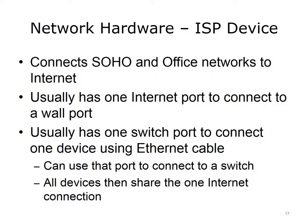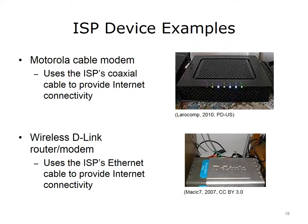The ISP device usually has one Internet port, which can be connected to a wall port. The ISP will usually provide the necessary cabling and other supplies needed to connect to the ISP device. This device usually has one switch port to connect one office or home device via an Ethernet cable. Users can decide to use that port to connect to a switch, which can then connect to other devices or even other switches to extend the network. There is no need to purchase or lease a more expensive device from an ISP to connect other devices to the network. In this case, all the devices share the one Internet connection. The top right image shows a Motorola cable modem router, which uses the ISP's coaxial cable to provide Internet connectivity. The bottom right image is a wireless D-Link router modem, typically used as a residential DSL gateway, which uses the ISP's Ethernet cable to provide Internet connectivity.